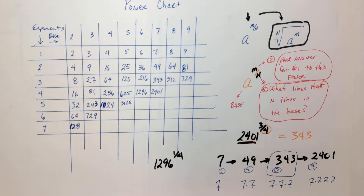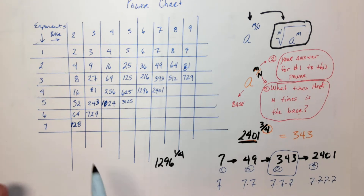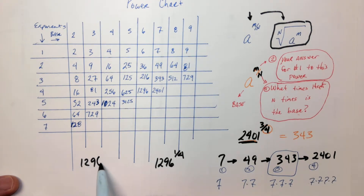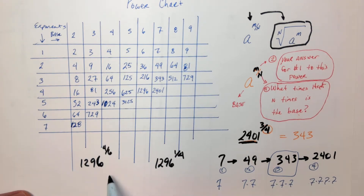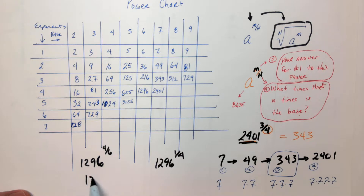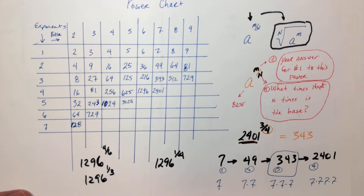So what if it was 1296 to a different power — to 4 over 6? Well, 4 over 6 reduces, right? To the 2/3 power. Would you agree?